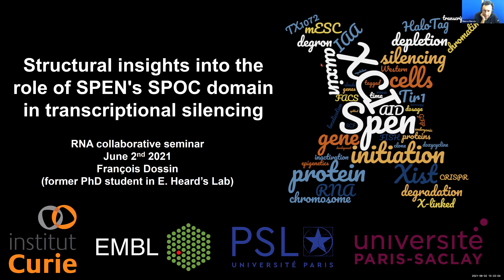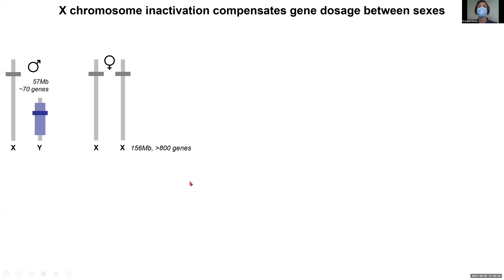Thank you very much Lena. We now give the stage to François to explain about SPEN and transcription silencing. My talk is a little different from what I originally planned, as I'll be mainly presenting some unpublished data. I recently graduated from Edith's lab, where we're interested in X chromosome inactivation. In mammals, females have two copies of the X chromosome, and unlike the small Y chromosome encoding about 70 genes, the X chromosome is very large, encoding more than 800 genes in humans.